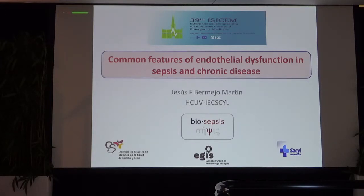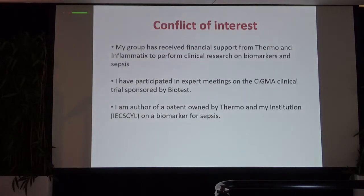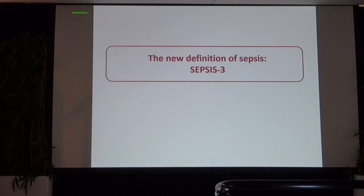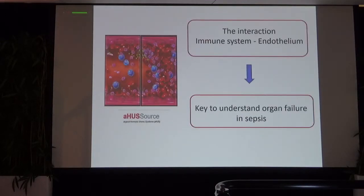Thanks to the organizers for inviting me to this interesting meeting. Let's be provocative: could sepsis patients be predisposed to sepsis based on previous endothelial dysfunction? In the new definition of sepsis, organ dysfunction is at the center, and the interaction between the immune system and the endothelium is key to understanding the physiopathology of organ dysfunction in sepsis.